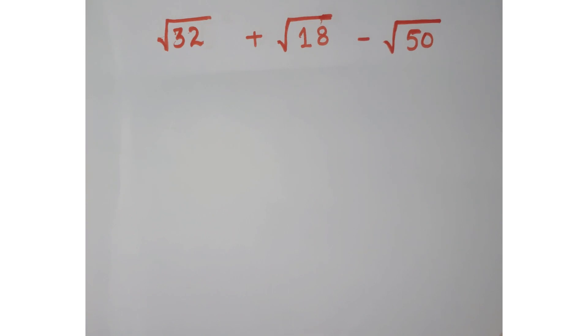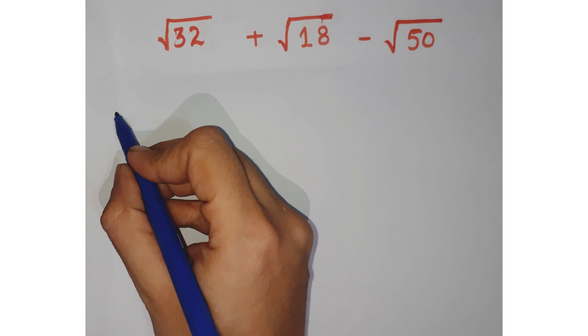Hello friends, welcome to the Learning Curve. Look at this square root problem: the question is √32 + √18 - √50 and we have to simplify this question. Let's see how do we proceed.